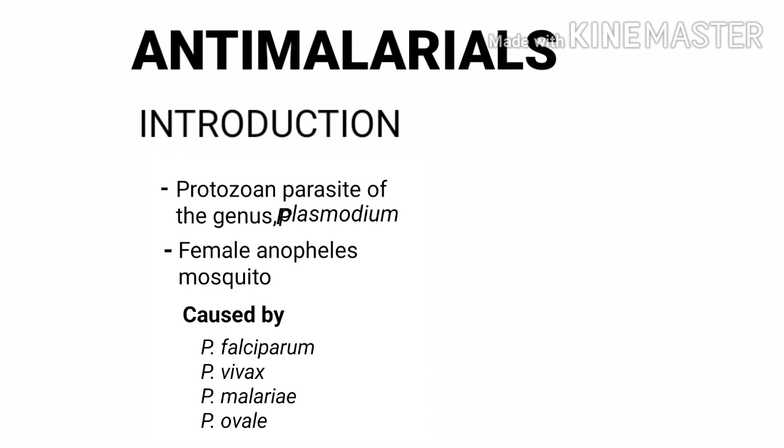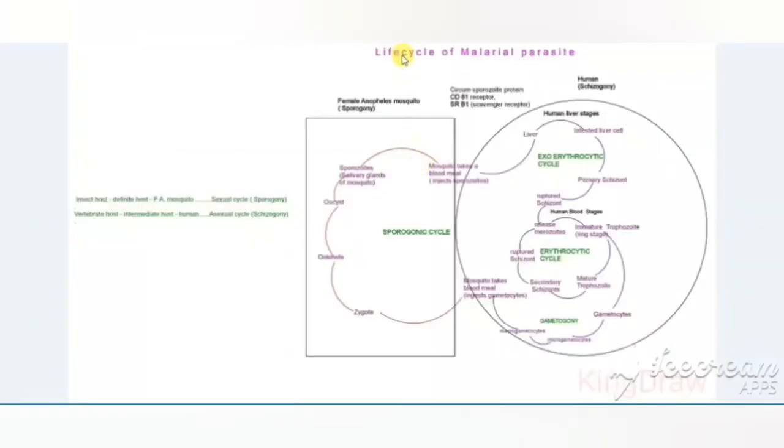The asexual phase occurs in humans, and the sexual phase occurs in the mosquito, that is the female Anopheles mosquito, which is the vector for this disease. Malaria is caused by four species of the Plasmodium genus: Plasmodium falciparum, Plasmodium vivax, Plasmodium malariae, and Plasmodium ovale.